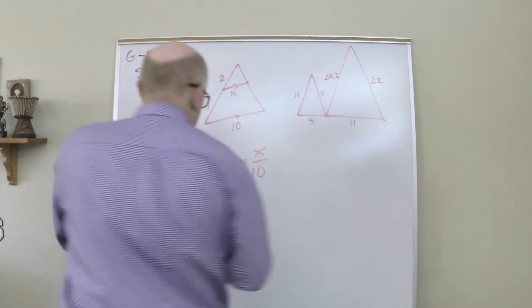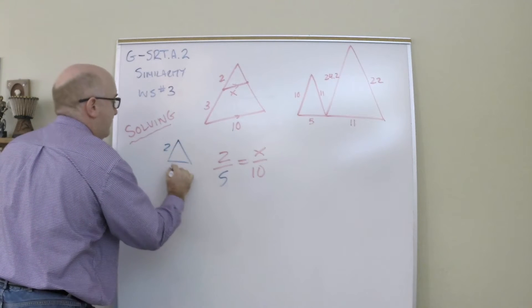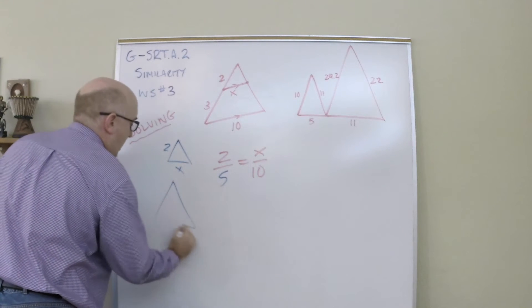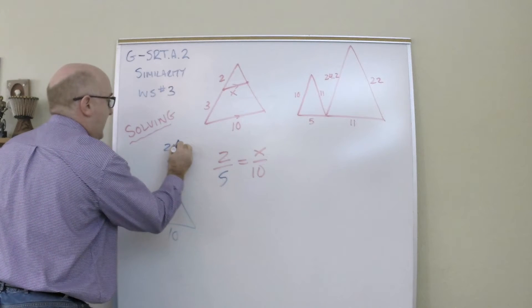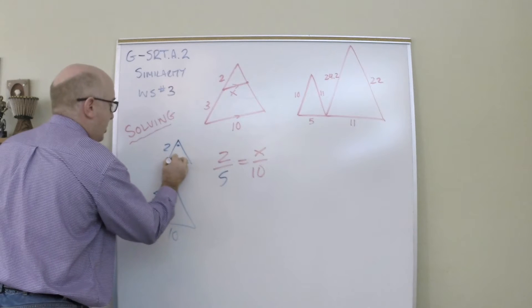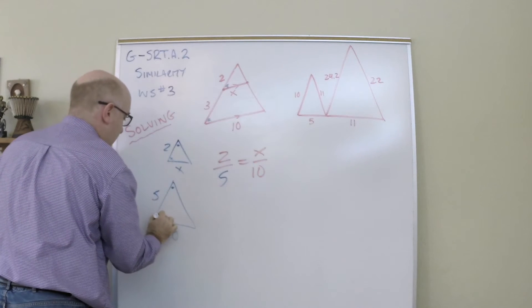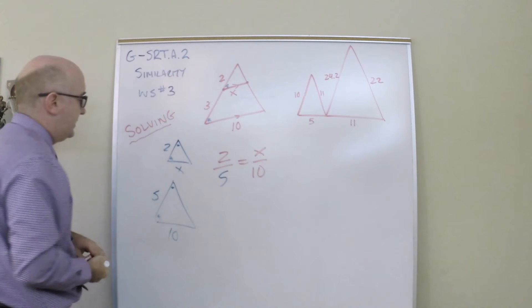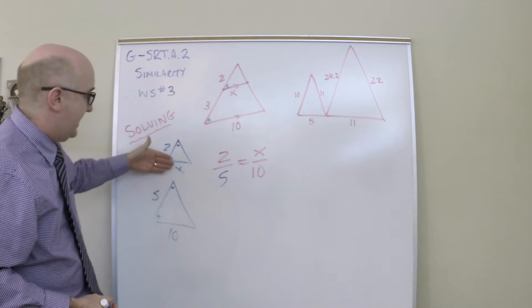I always tell students to pull these out. So it always works better if they draw them as separate entities. And again, you can mark them or show them however to keep track of those angles and things so you can see how it works. But you can see the two is to the five as x is to ten.